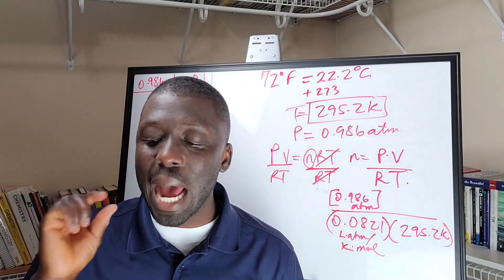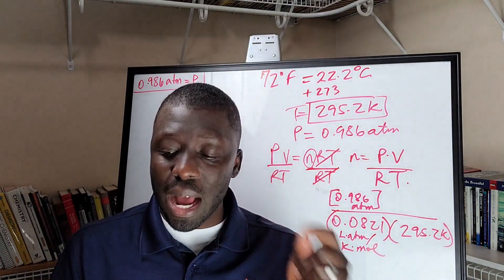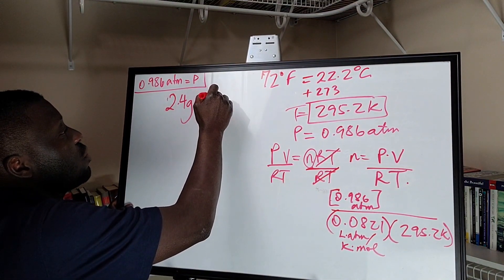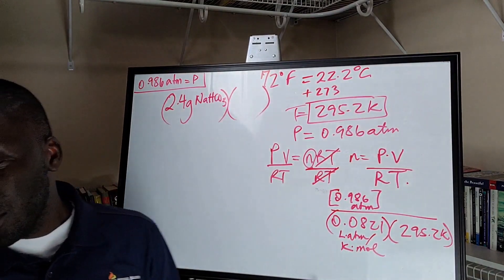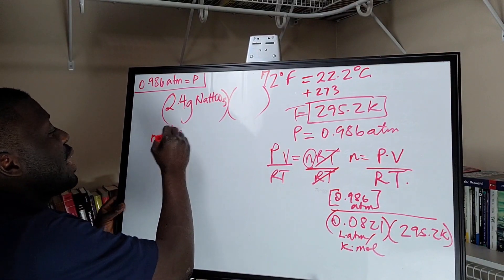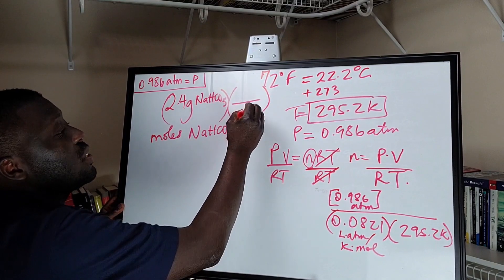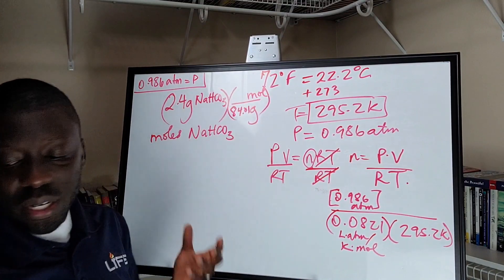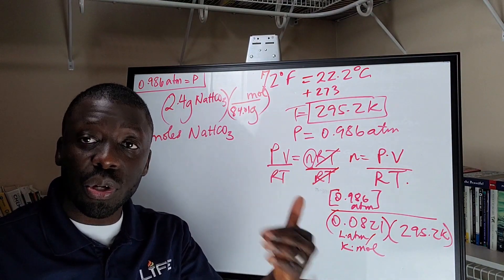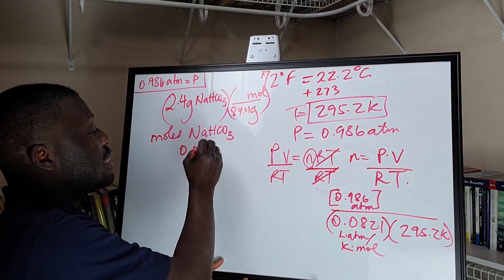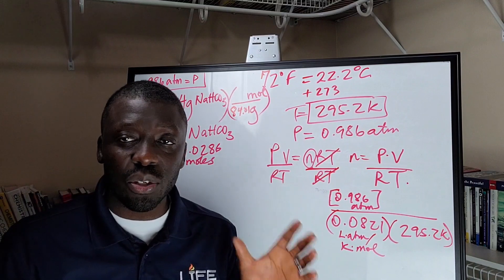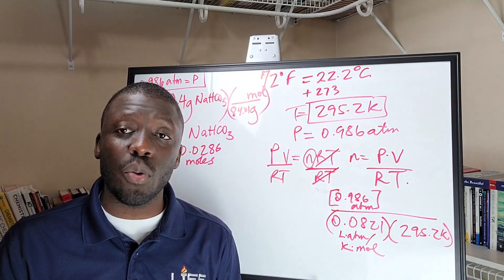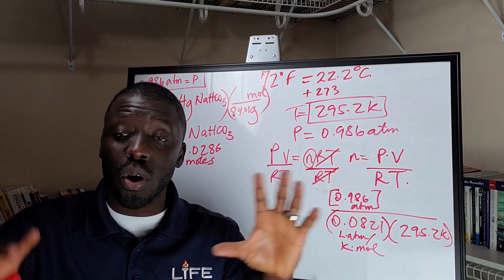Let's take a step back and talk about what happened in the beginning. We had 2.4 grams of sodium bicarbonate — NaHCO3. We can do some math here to convert this to the moles of NaHCO3. The way we do that is you write the molar mass of NaHCO3, which is 84.01. From that, we find 0.0286 moles of NaHCO3. So it's important to know that is the number of moles of the sodium bicarbonate.